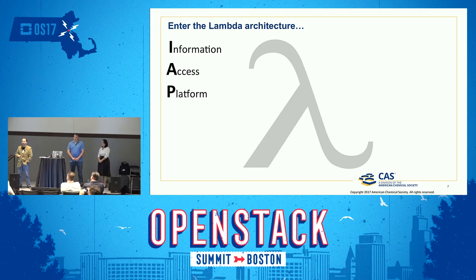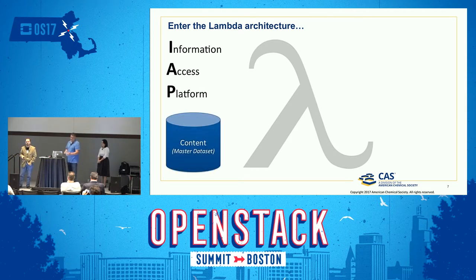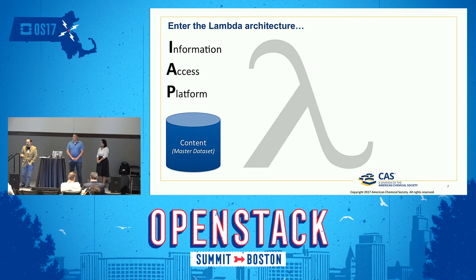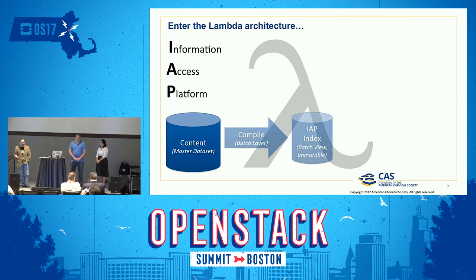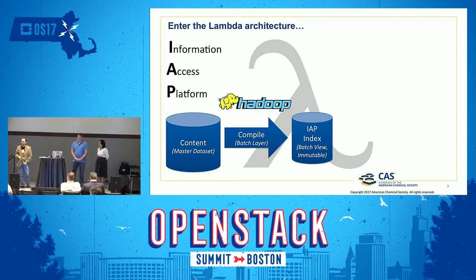As any great technology organization, we love our acronyms. The IAP conforms to the Lambda architecture for the most part. The Lambda architecture first starts with our master data set — what we call our content — that's nearly 200 years of rich chemical information gathered using our scientists and analysts. That master data set goes through what we call compilation, which is essentially the batch layer in Lambda architecture, and that's used to produce what we call an IAP index. This is the batch view — an immutable view of the data designed for serving use cases. We use Hadoop primarily to power this.